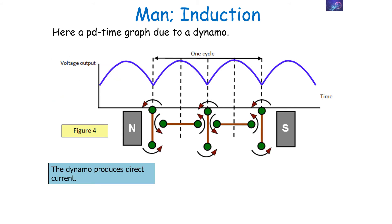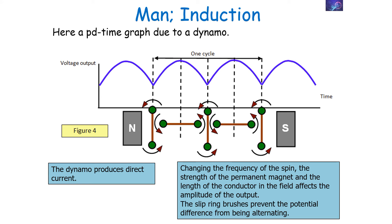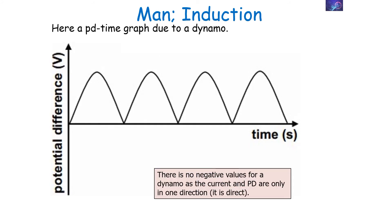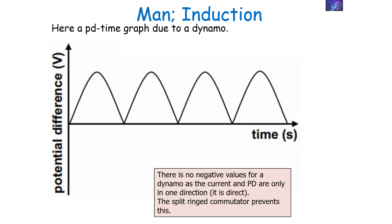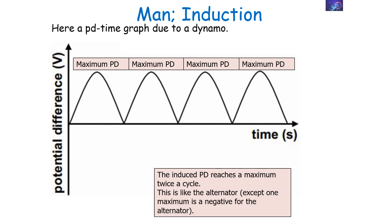In contrast, here is the potential difference–time graph for a dynamo. The dynamo produces direct current. Changing the frequency of spin, the strength of the permanent magnet, and the length of the conductor in the field all affect the amplitude of the output — the maximum potential difference induced. The split ring commutator prevents any values from being negative, so there are no negative values in the dynamo's PD–time graph. The induced potential difference reaches a maximum twice a cycle — like the alternator — but for the alternator there's a positive maximum and a negative maximum, whereas for a dynamo both maximums in that cycle are positive.